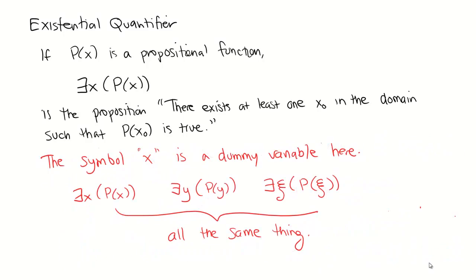The symbol x in existential statements is like the dummy variable in a calculus integral. '∃x such that P(x)' is the same as '∃y such that P(y)' is the same as '∃ξ such that P(ξ).' You can swap variable names when trying to make things clearer.